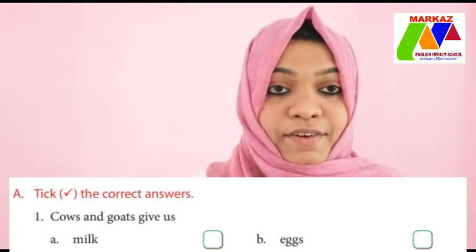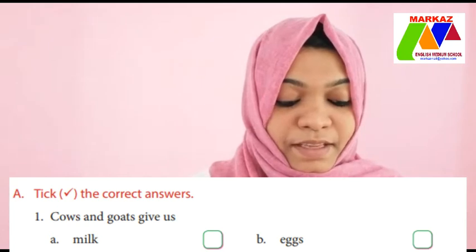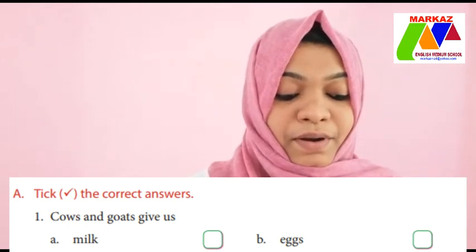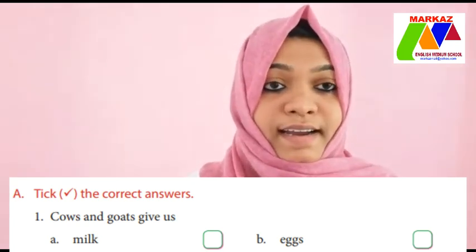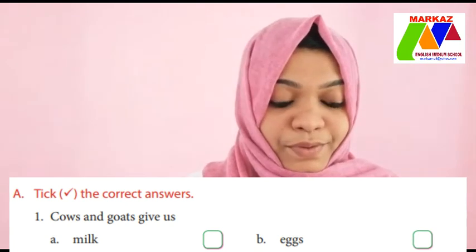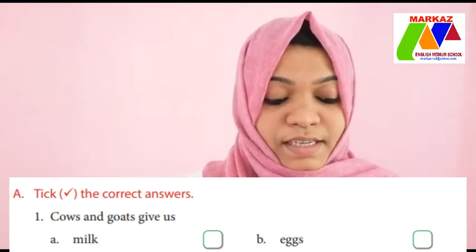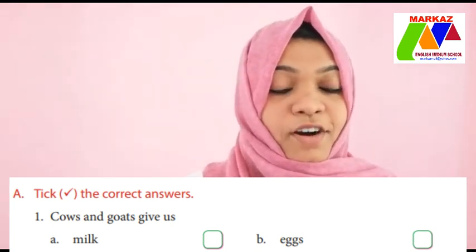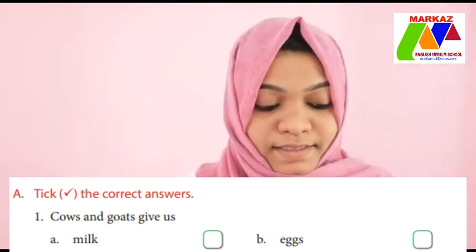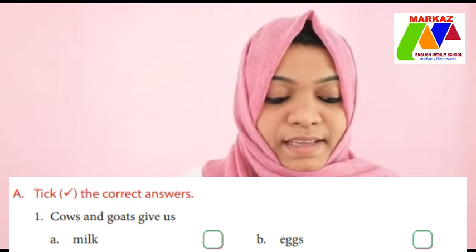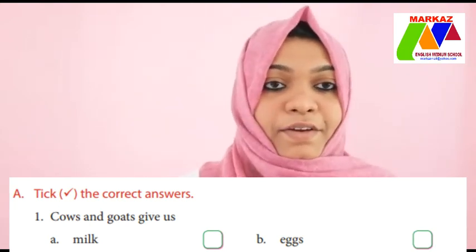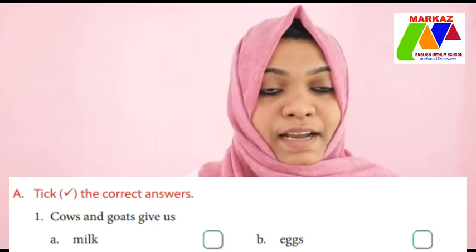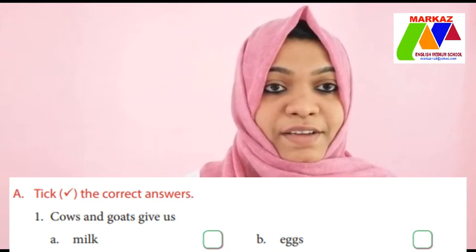First one: cows and goats give us milk or egg? What is your answer, children? You have two options — choose the correct one and tick it. Cows and goats give us milk. Very good. Cows and goats give us milk.